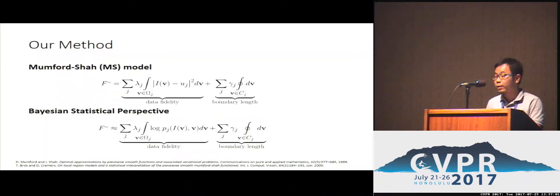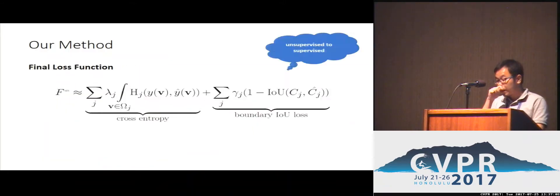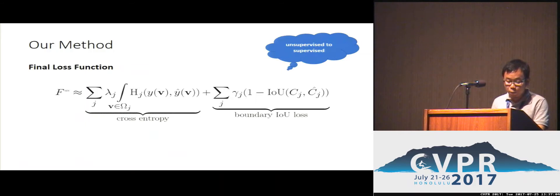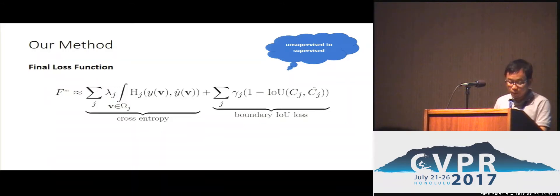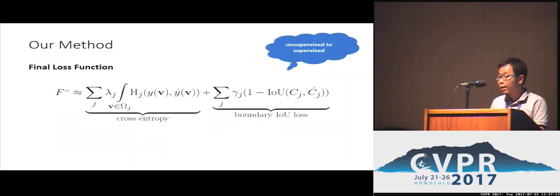As demonstrated in our paper, we can approximate the previous Mumford-Shah model with energy functions, which also contains two parts: a probability-based cross-entropy loss term and a boundary IOU loss term.